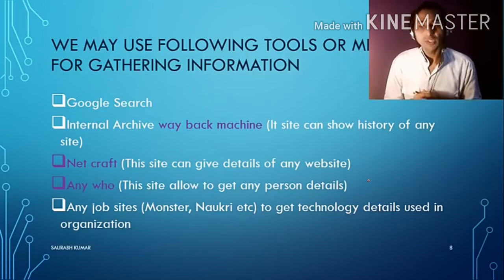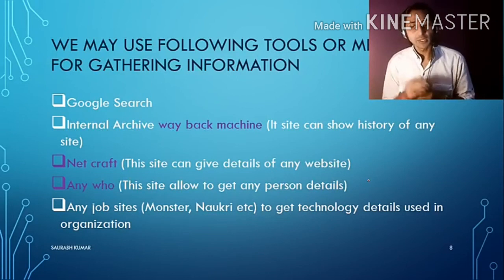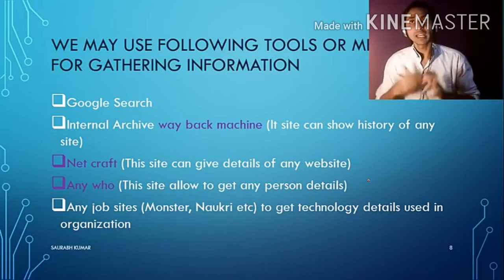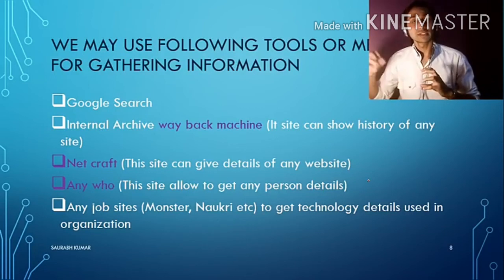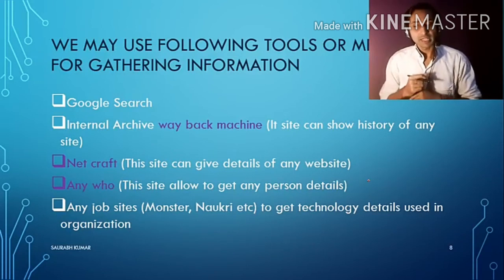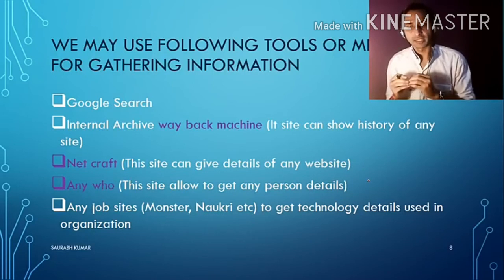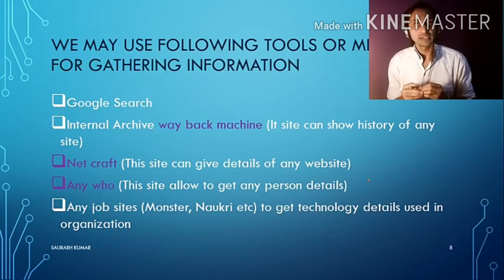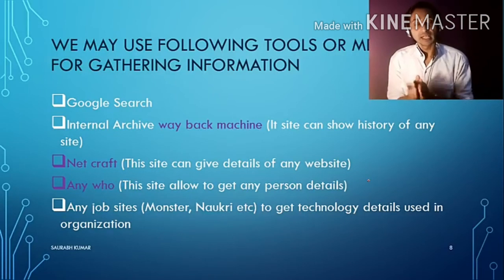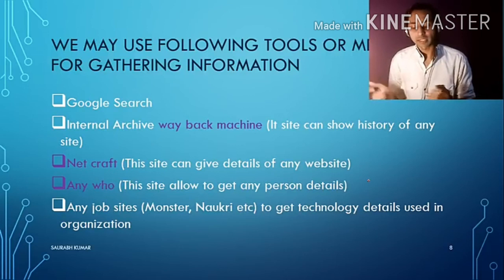Some other methods and tools that can be used to gather information include Google search, which I already explained. Another one is the Wayback Machine — a website that helps you collect information about any website by going through snapshots of it in history. I am going to demonstrate at least two tools: one is the Wayback Machine and one is Netcraft. Netcraft is also a website where you can get a lot of detail about an organization. We also have Anywho, which helps you collect information about any person — you can search for someone and get their mobile number, email ID, address, and so on.